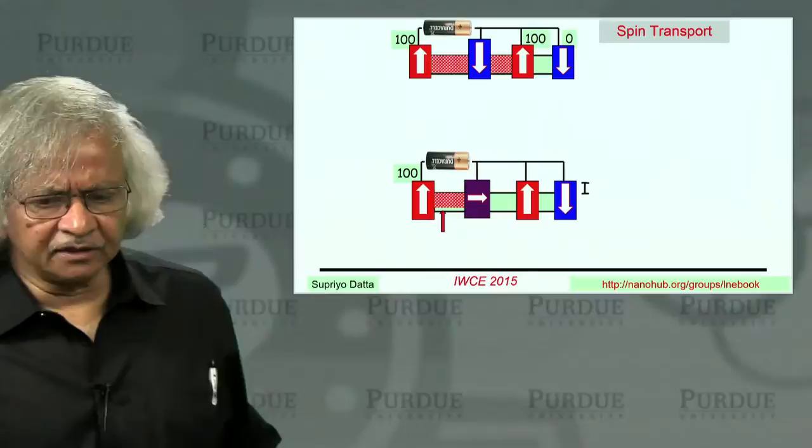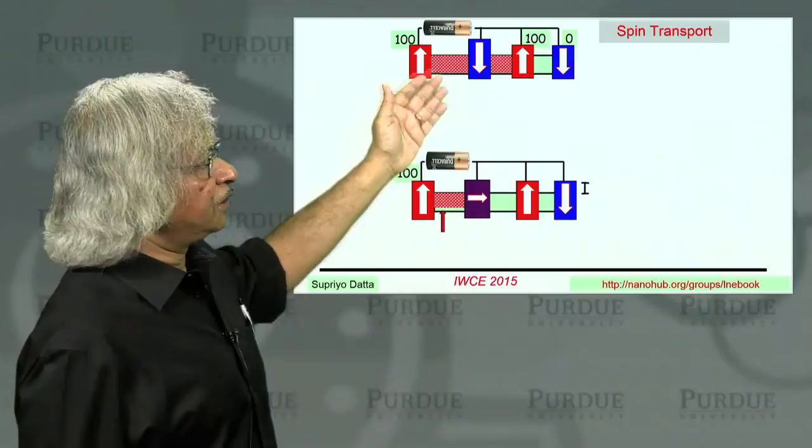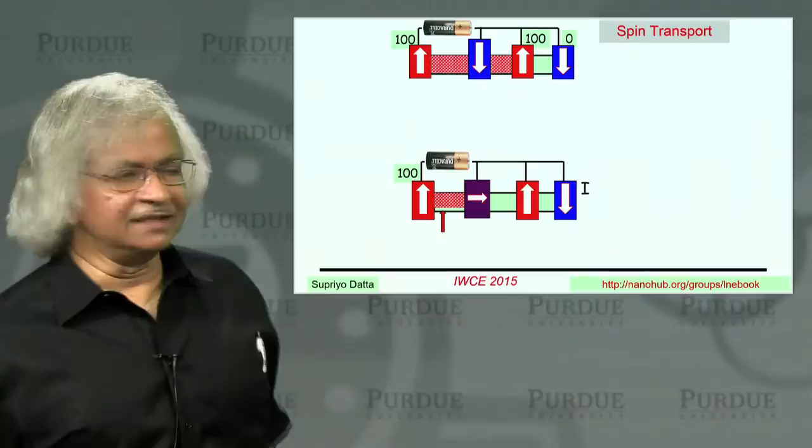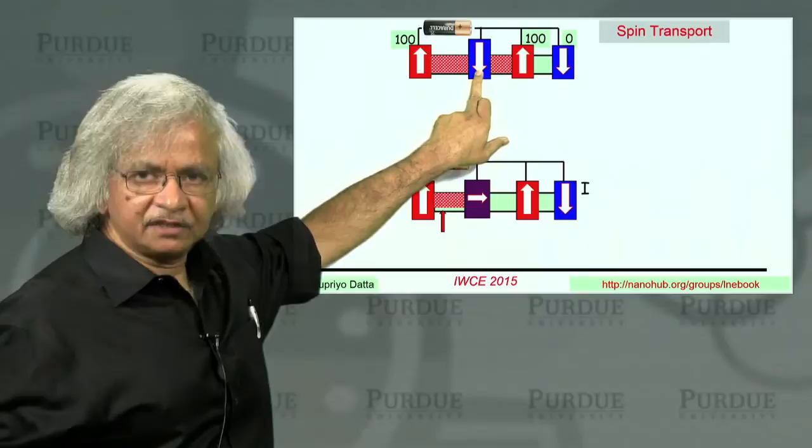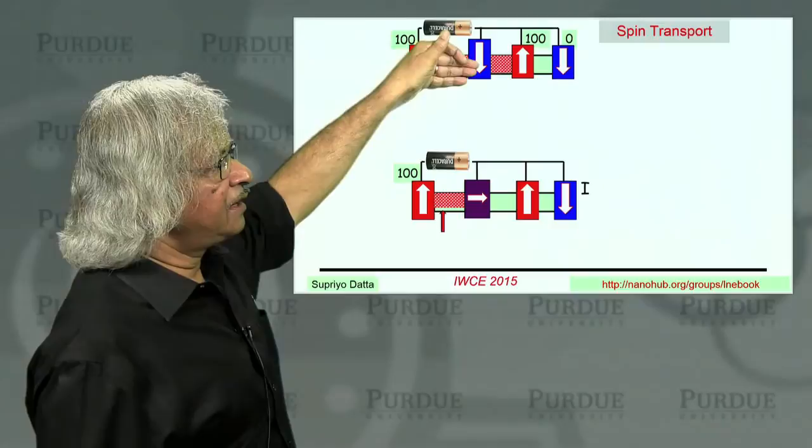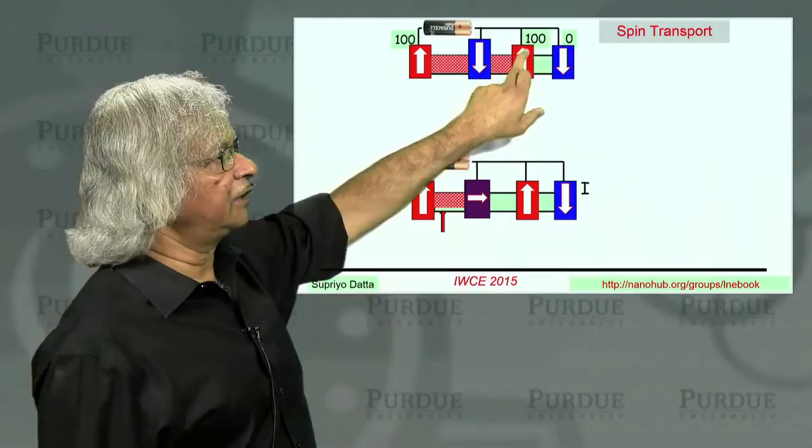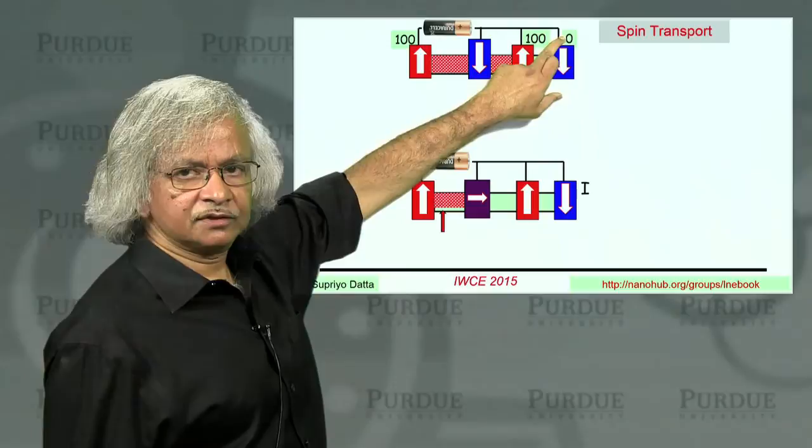And just to give you an example, now these days we are often working on spin transport. And in spin transport, you could think of a structure like this. And for this discussion, I'm assuming it's an ideal structure where you have these perfect magnetic contacts. This one which only injects and detects up spins. And this one which only injects and detects down spins. So you have up spins injected from here. Let's say 100 per second. Here there is no current because this only looks at down spins. And then here all 100 go out. And then if you put another down spin contact, no current flows.